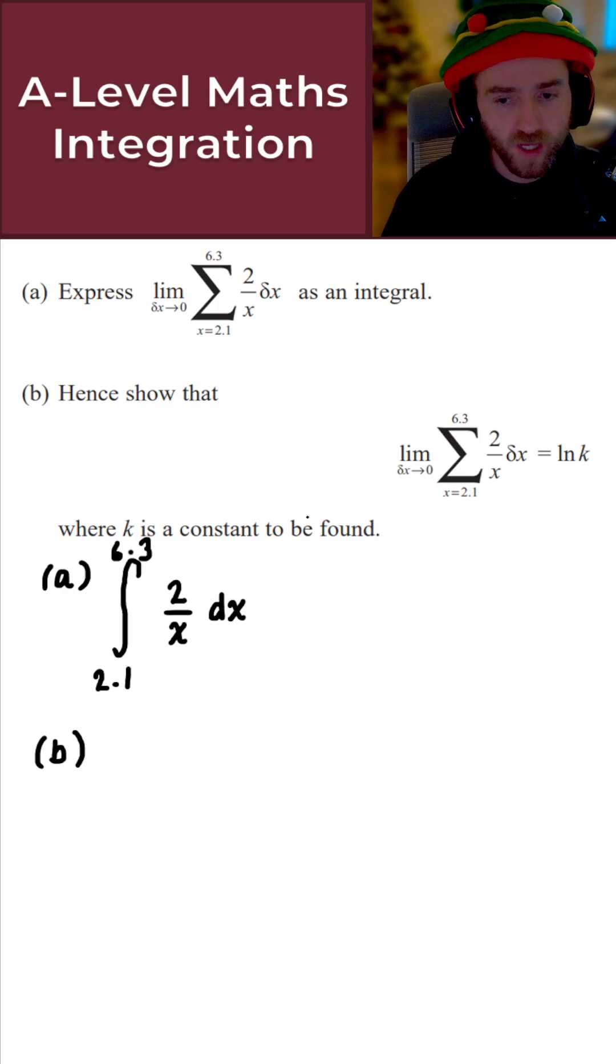Now hopefully this integral is relatively straightforward for most of you to evaluate. The integral of 2 over x with respect to x is simply 2 ln x. So I'll do part b together with part a. What I get here is simply 2 ln x.